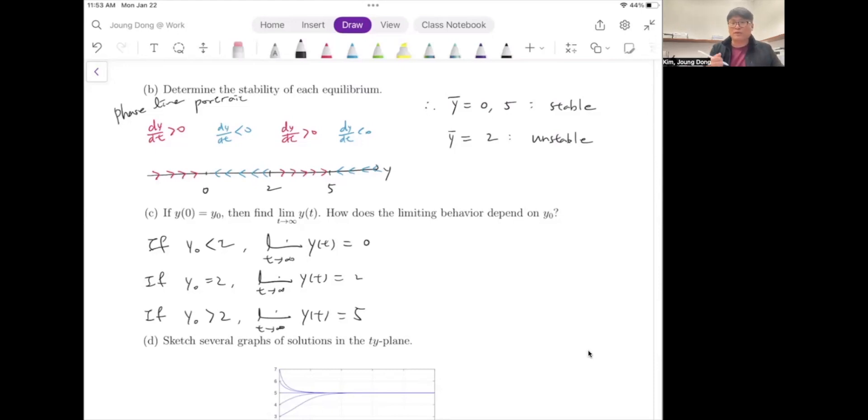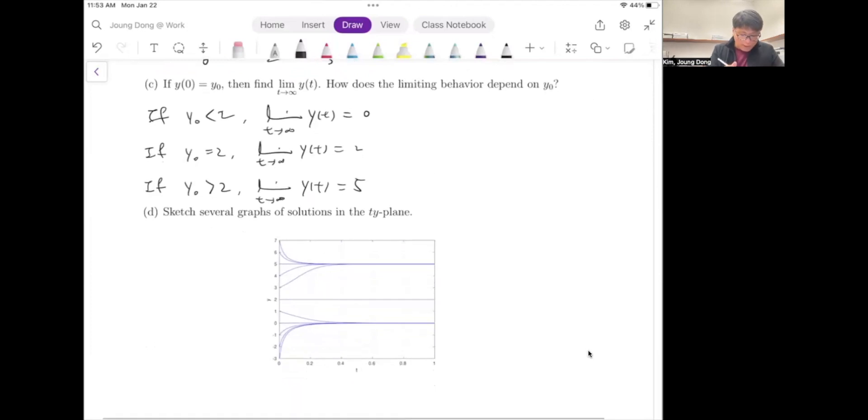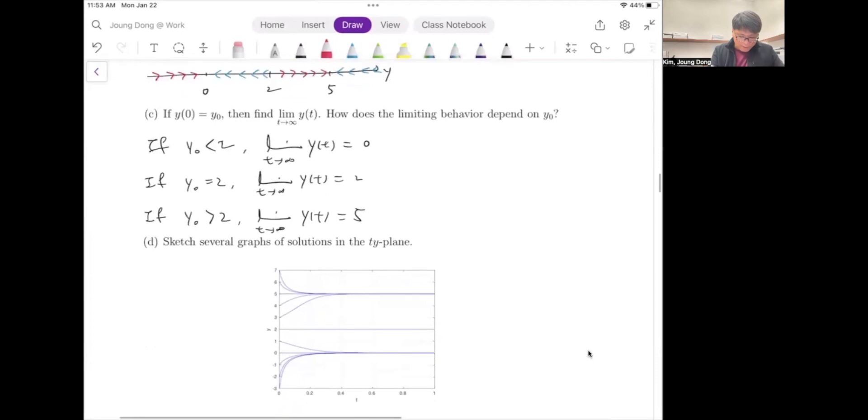And also, if you draw the direction field plotter using the direction field plotter, then the curves looks like that. That's really true. And let me try to draw the phase line portrait again. Less than 0 is going up. Going up. I'm talking about the vertical line for the graph, the solution curve is the phase line portrait. And between 0 to 2 is going down. And 2 to 5 is going up. And above 5 is going down. See? As we did analysis, that's exactly the same thing represented in this curve.